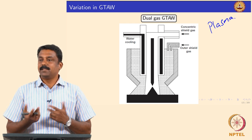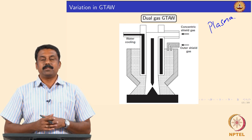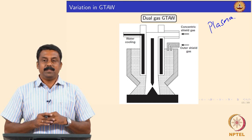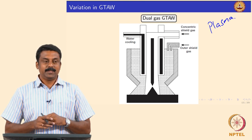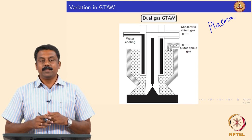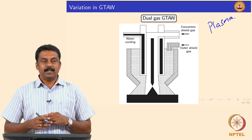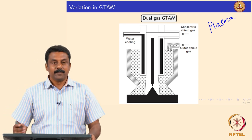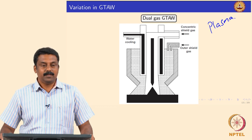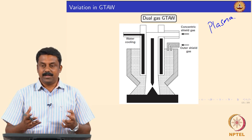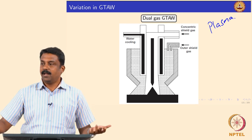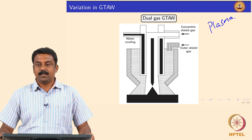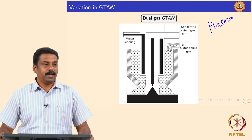What are the two mechanisms by which convective heat transfer takes place? Buoyancy and plasma jet formation. Buoyancy is defined by density difference. In the middle of the arc we have higher temperature, whereas in the arc envelope we have low temperature, and because of that we have a flow.